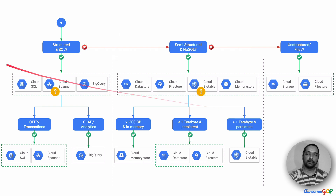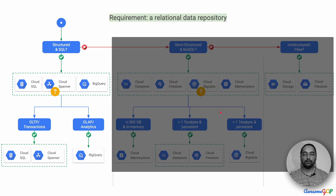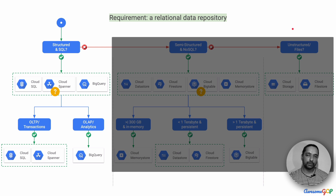For that, let's look at the flowchart. The two options we are considering are Cloud Spanner and Cloud Bigtable. Cloud Spanner comes under Structured and SQL, whereas Cloud Bigtable comes under Semi-Structured and NoSQL. The first part of the requirement says it should be a relational data repository. Therefore, the only one that suits is Cloud Spanner, and it is clear that Cloud Spanner is the right option among these choices.